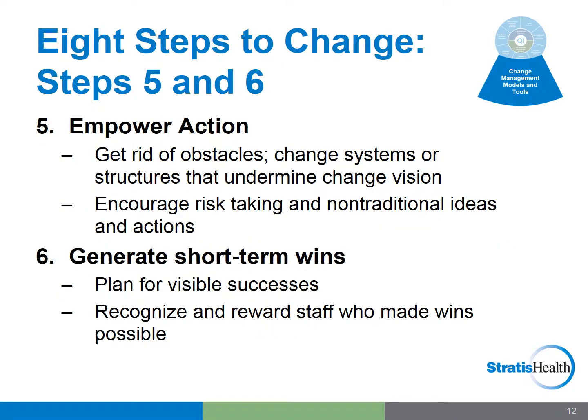Step 5 is to empower action. Get rid of obstacles and change systems or structures that undermine the change vision — think back to the Lewin model where we identify restraining factors. Encourage risk-taking and non-traditional ideas and actions; by doing so, you are fostering an environment of creativity and productive brainstorming. Step 6 is to generate short-term wins. Change gains traction best when we are able to recognize and appreciate the successful milestones along the way. Be sure to create visibility around the success your team is achieving, and visibly recognize and reward staff, QI team members, or the team as a whole who made the wins possible. These incremental wins will then provide further impetus for change and help strengthen leadership, while positive feedback builds morale and motivation to continue the work.